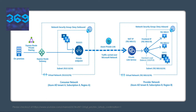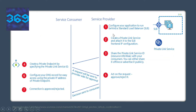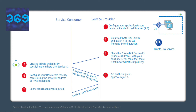Now let's look at the workflow. First, you configure your application to run behind a standard load balancer (SLB). Next, you create a private link service referencing the load balancer. In the load balancer selection process, choose the front-end IP configuration where you want to receive the traffic from your consumer network. All consumer traffic will appear to originate from a pool of private IP addresses to the service provider. Choose your properties and settings on the private link service appropriately.